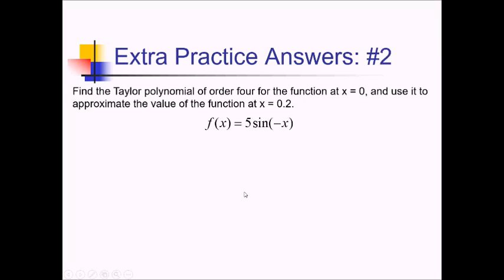For this problem, they want us to find the Taylor polynomial of order 4 for f of x equals 5 sine of negative x, and then approximate the value at 0.2. The key here is they said Maclaurin polynomial at x equals 0, so we can start by looking at the Maclaurin series for just sine of x and build off of that.